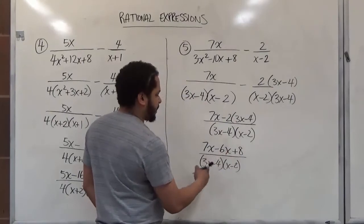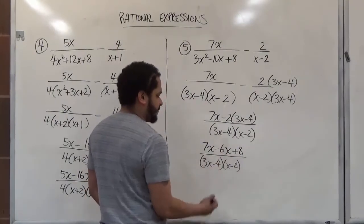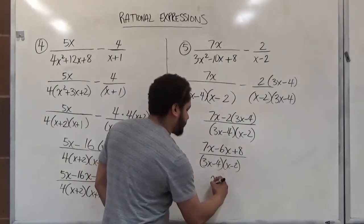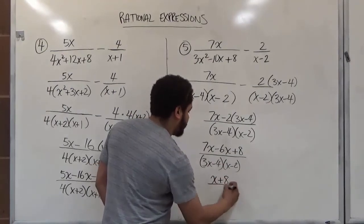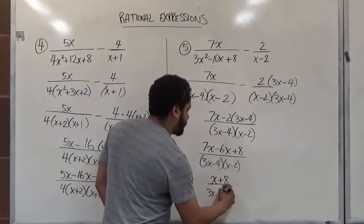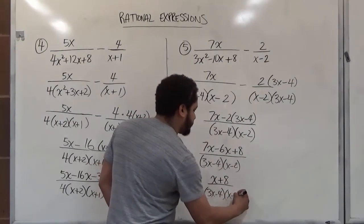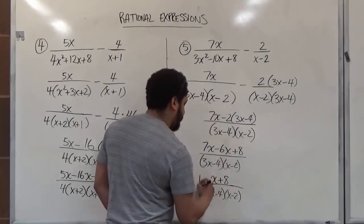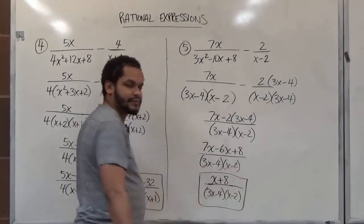So now we just subtract. 7x take away 6x gives us 1x, think of them as objects. And we have x plus 8 over 3x take away 4 and x minus 2. And that's our solution. Thank you.